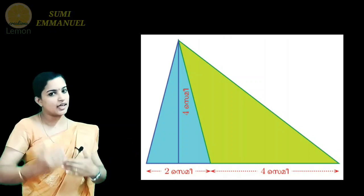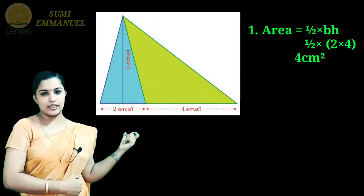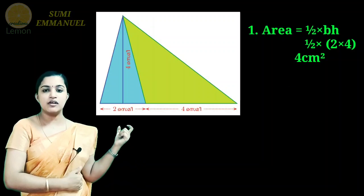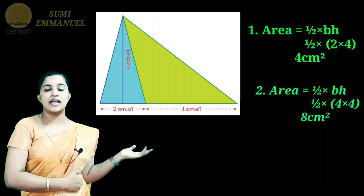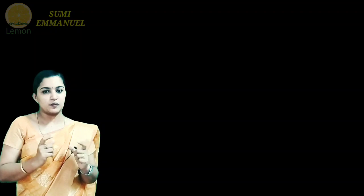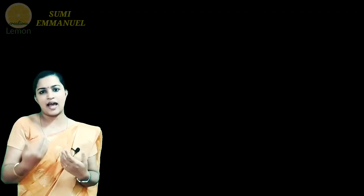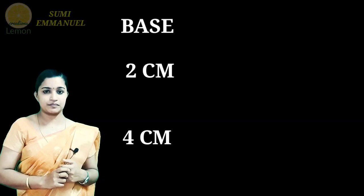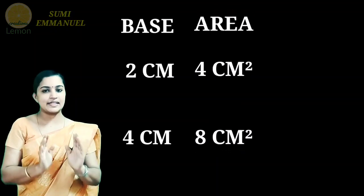You can learn from the first triangle. The base is 4 cm and height is 4 cm. Half into 4 into 4 — how much do we have? 8 cm squared. We have two triangles. The base is equal to 2 and 4 cm. The area is equal to 4 cm squared. The other base gives 8 cm squared.